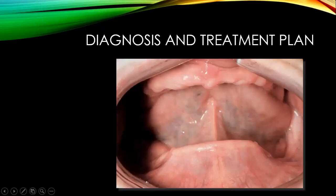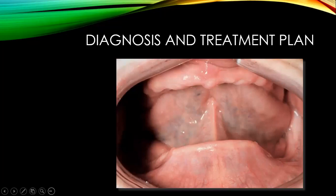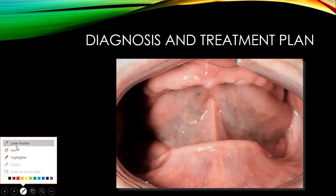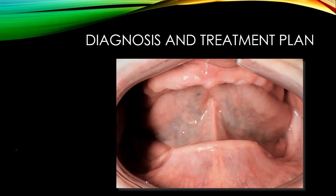Whenever a patient comes to you in a clinic and asks for a denture, the first thing you need to do is an oral examination. You will take the patient's history, then do the examination and diagnose the case. In some patients it is full edentulous, so you need to first examine whether the patient is partially dentulous or edentulous, because a complete denture is always given in the case of an edentulous patient.